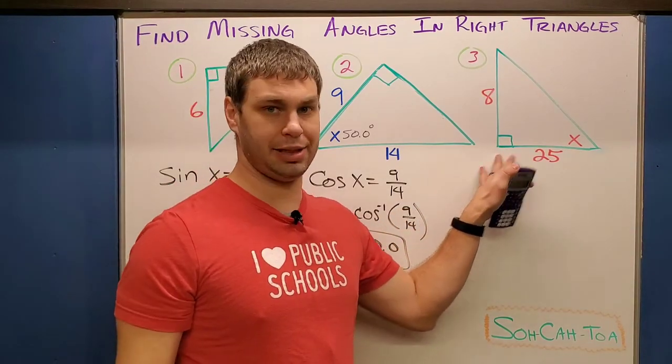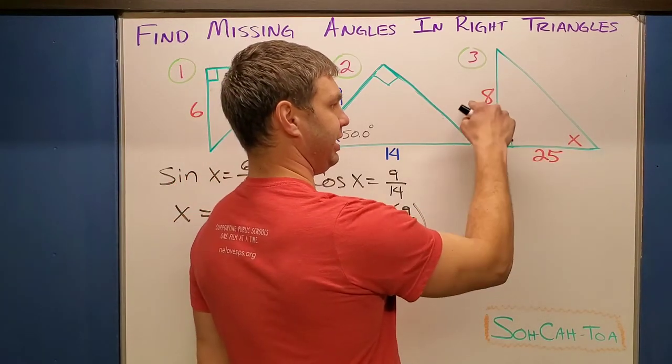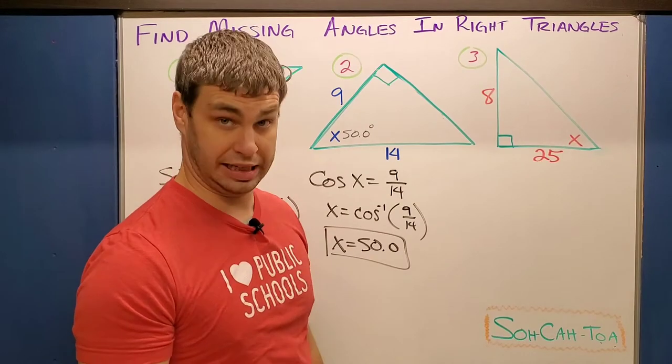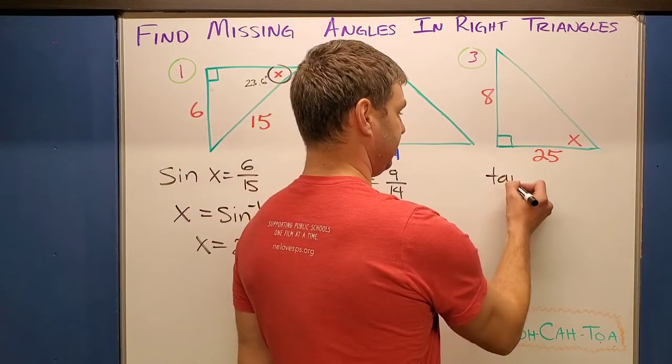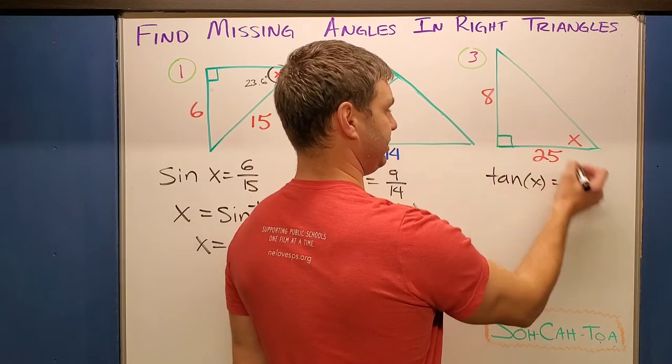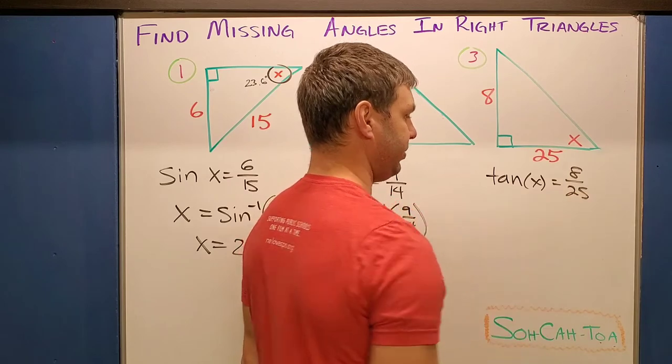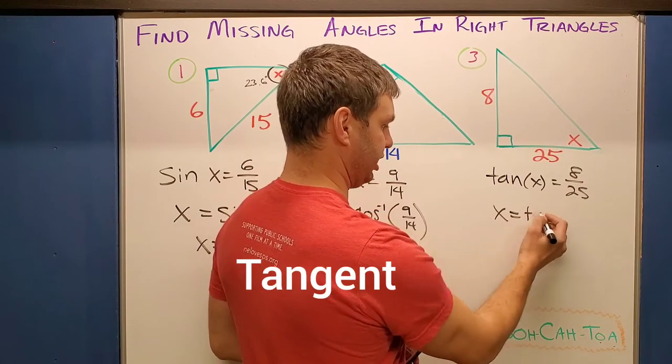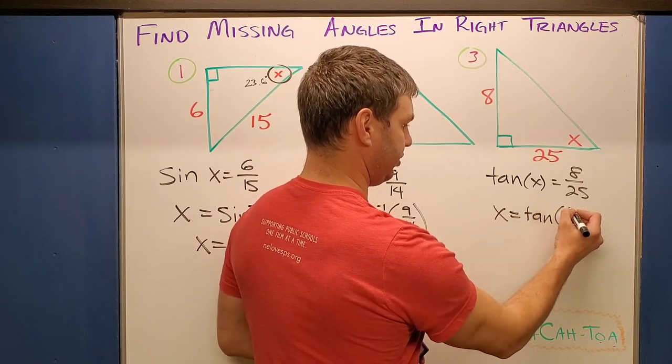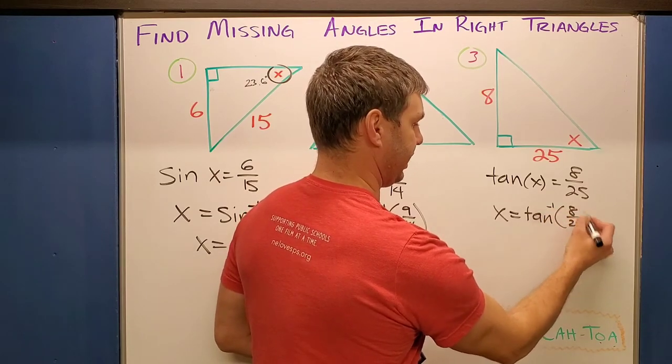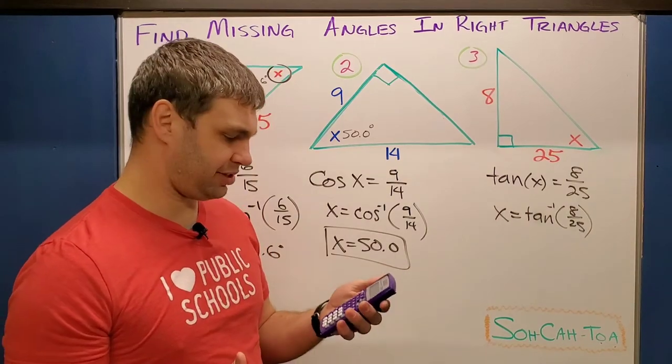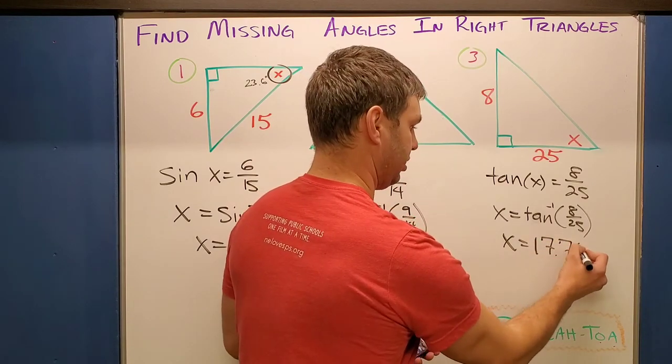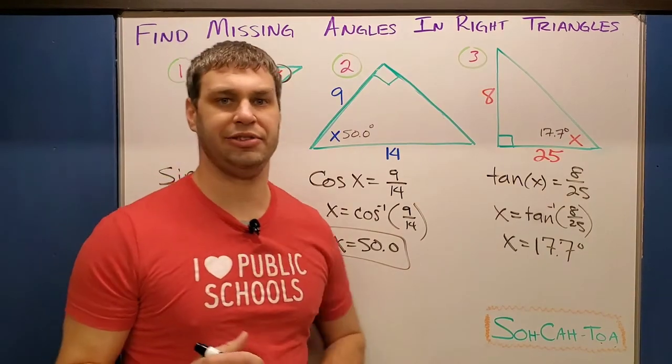What about number three? This time our X is in the far corner and compared to it, we have the opposite leg and the adjacent leg. Opposite and adjacent corresponds with our trig function tangent. So we have tangent of our angle X equals the opposite 8 over the adjacent 25. We're going to let our calculator do the work for us, because this is going to be X equals the inverse tangent of 8 over 25. Let's do that in the calculator. This one gives me 17.744, so if I round to the nearest tenth, X equals 17.7 degrees. Let's try four, five, and six.